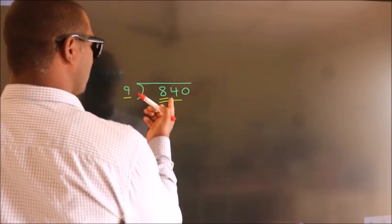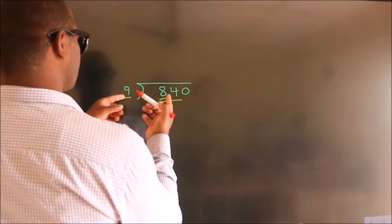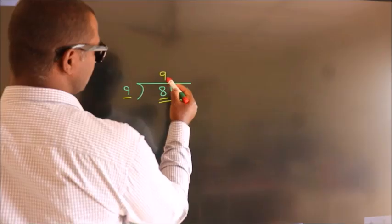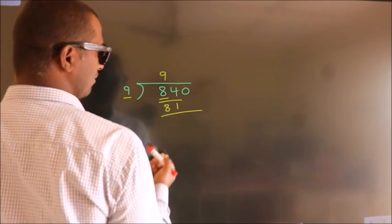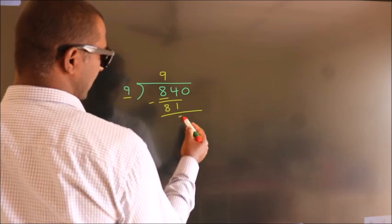A number close to 84 in the 9 table is 9 times 9 equals 81. Now we subtract and get 3.